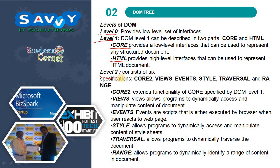Level 2 consists of six modules: Core 2, Views, Events, Style, Browser, and Range. Core 2 extends the functionality of Core specified by DOM Level 1. Views allows programs to dynamically access and manipulate content of the document. Events are scripts that are executed by the browser when users interact with web pages. Style allows programmers to dynamically access and manipulate content of the document.